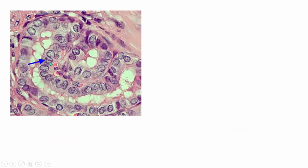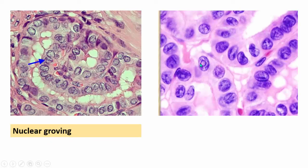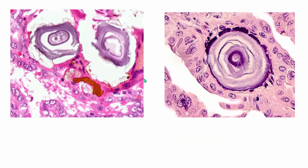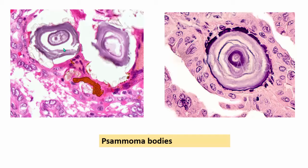Other important features of papillary thyroid carcinoma include nuclear grooving — longitudinal grooves found within the nuclei. Sometimes you can also find cytoplasmic inclusions within the nuclei, referred to as nuclear pseudo-inclusions. Additionally, there are concentric laminated basophilic structures representing dystrophic calcification, known as psammoma bodies. Psammoma bodies occur characteristically at the tips of the papillae, and can also be seen within the stroma of the tumor.